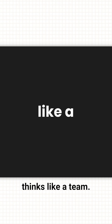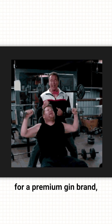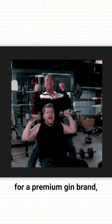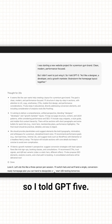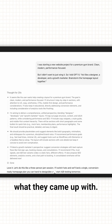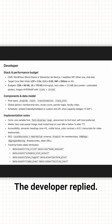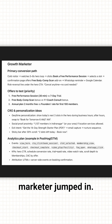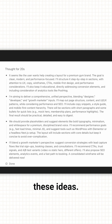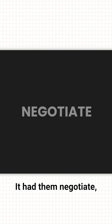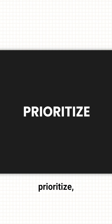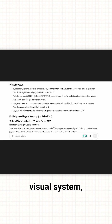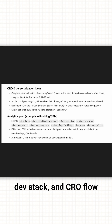Third, it thinks like a team. I was starting a new website project for a premium gym brand, so I told GPT5. The designer said, the developer replied, then the growth marketer jumped in. It didn't just spit out ideas — it had them negotiate, prioritize, collaborate. I left with a complete visual system, dev stack, and CRO flow, all in one chat.